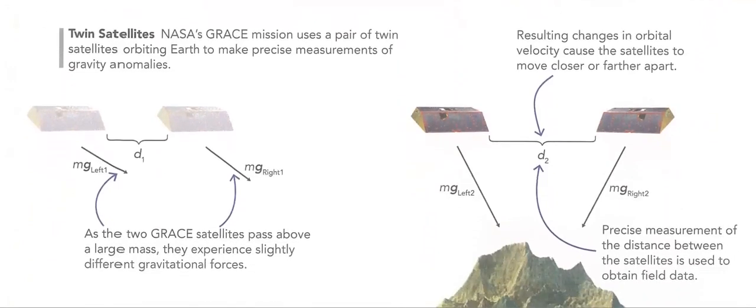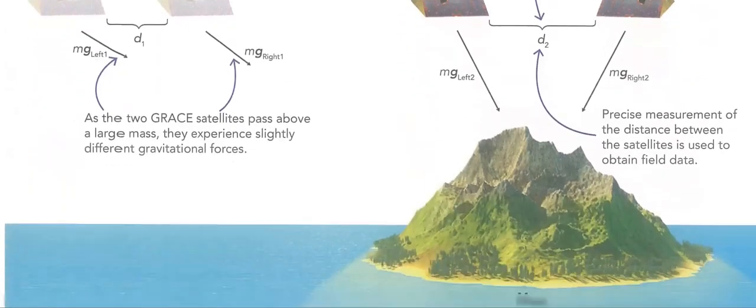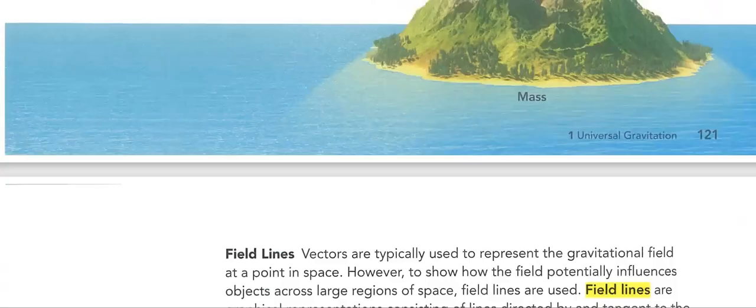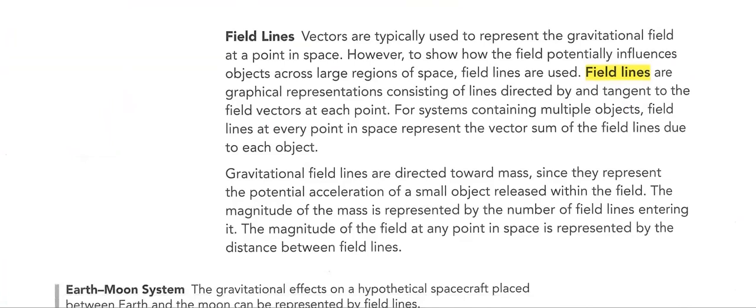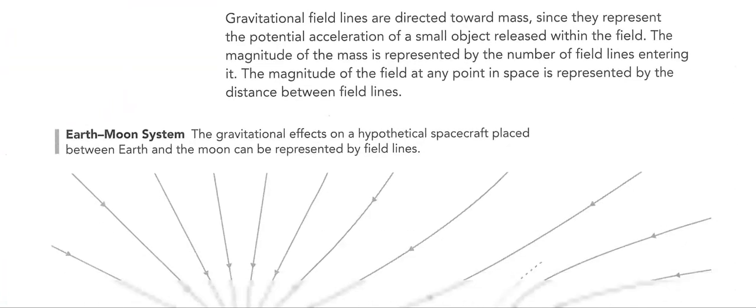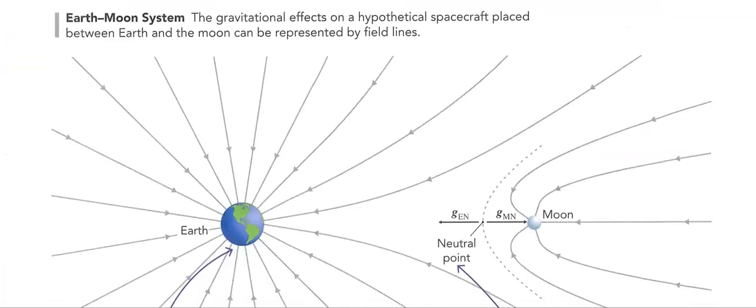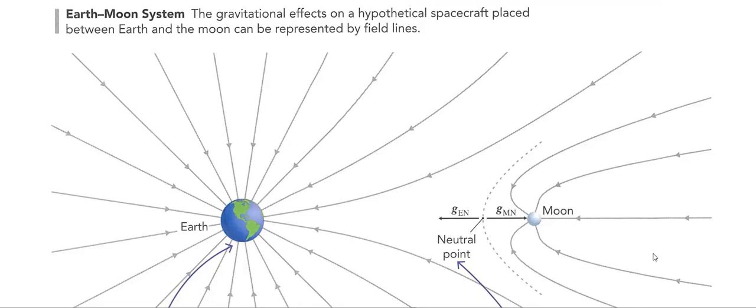We have something called twin satellites also. We will explain what it means in detail. A very important concept in physics is field lines. What are field lines? How do they point? Into which direction? Like here, the Earth-Moon system. Here is the Earth and here is the Moon. The field lines from Earth to Moon and vice versa. We will discuss it in detail.